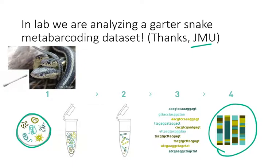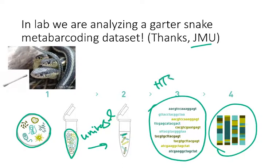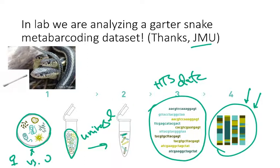They were swabbing the garter snakes, extracting DNA from those swabs, using universal primers to amplify just that one particular region needed to identify what bacteria were originally present. We get high-throughput sequencing data back, and we're using DNA Subway in lab to analyze that data. This week we'll continue the analysis and actually generate one of these taxonomic diversity plots to figure out if the bacterial communities are different in male versus female garter snakes.